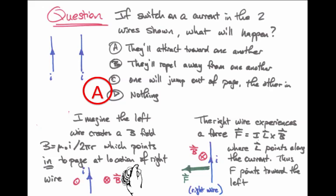We could do the same analysis for the force on the left-hand wire from the right-hand wire. Its magnetic field, the magnetic field from the right-hand wire, is pointing out of the page at the location of the left-hand wire.